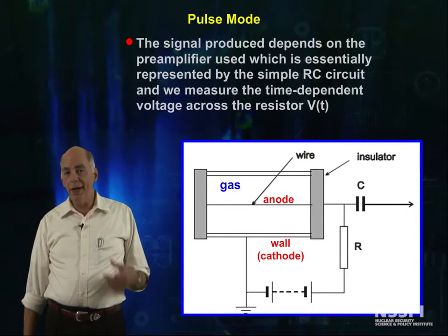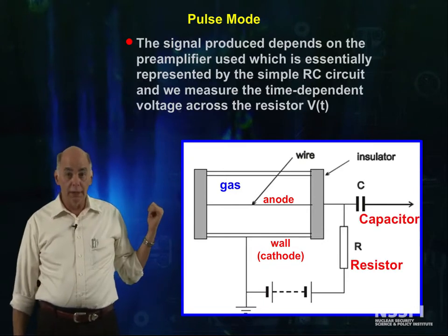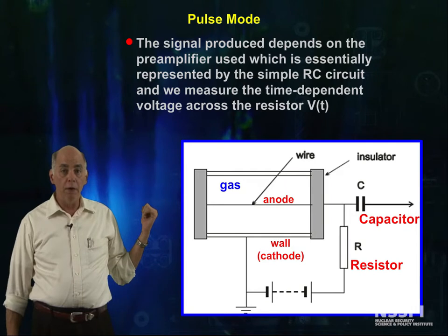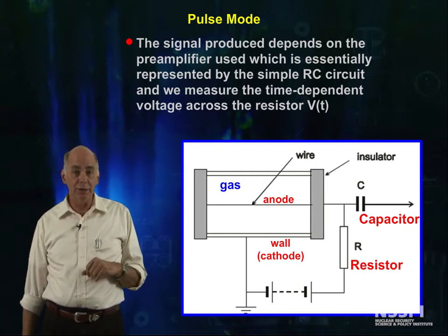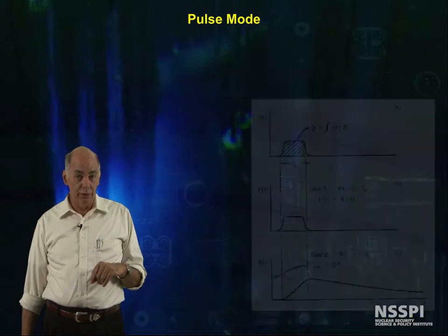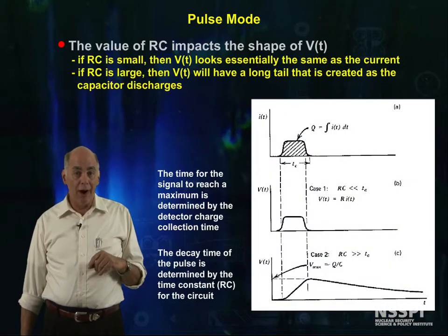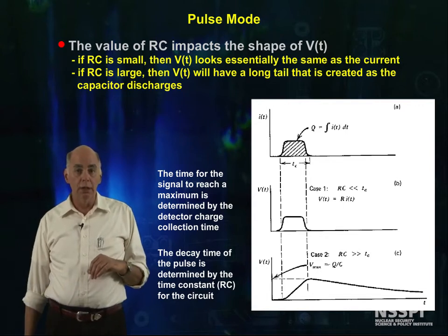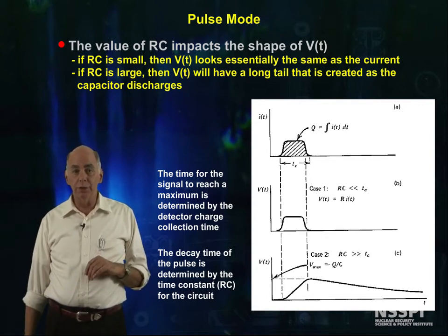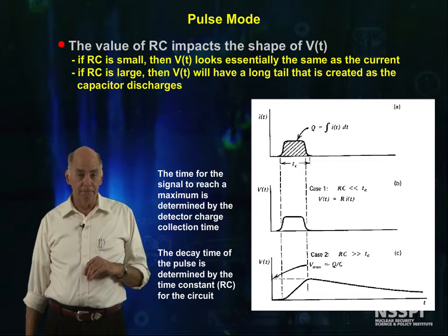If you stare at the electronics here for a minute, the important parts in the collection electronics is the capacitor and the resistor. The product of the capacitance times the resistance — the RC constant — has a profound influence on the shape of the signal coming out of the detector.